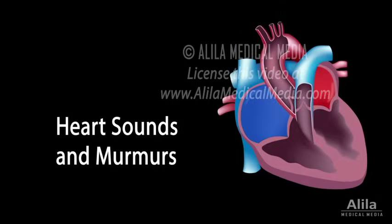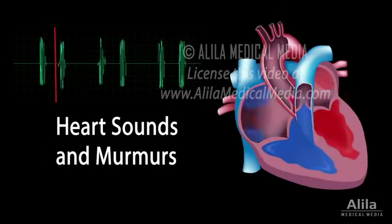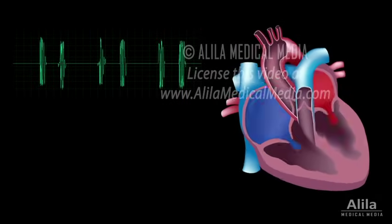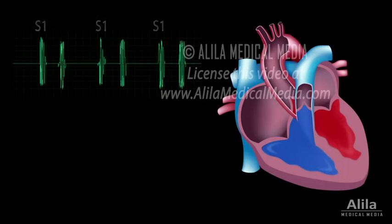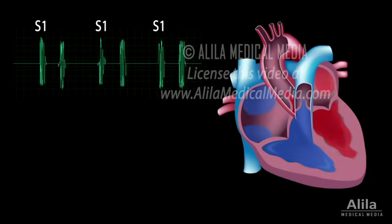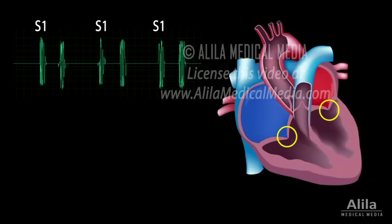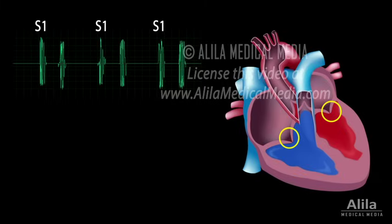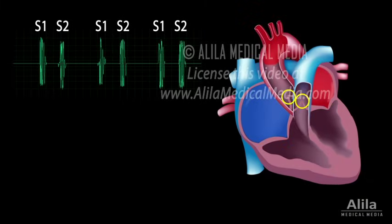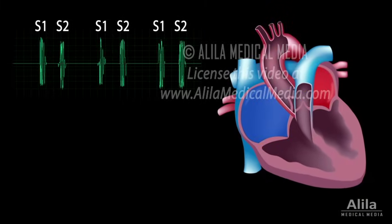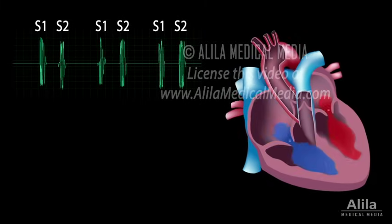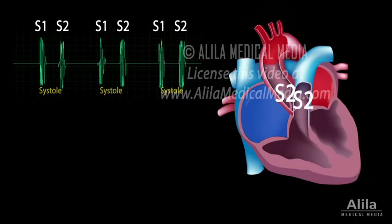When a healthy heart beats, it makes a lub-dub sound. The first heart sound, lub, also known as S1, is caused by the closing of the AV valves after the atria have pumped blood into the ventricles. The second heart sound, dub, or S2, originates from the closing of the aortic and pulmonary valves, right after the ventricles have ejected the blood. The time interval between S1 and S2 is when the ventricles contract, called systole.